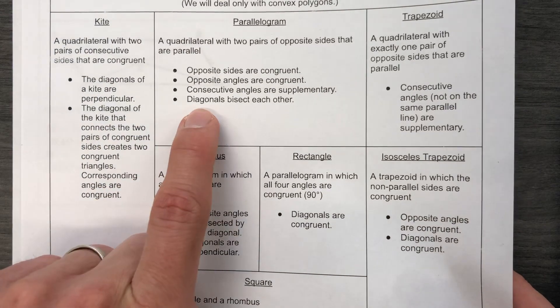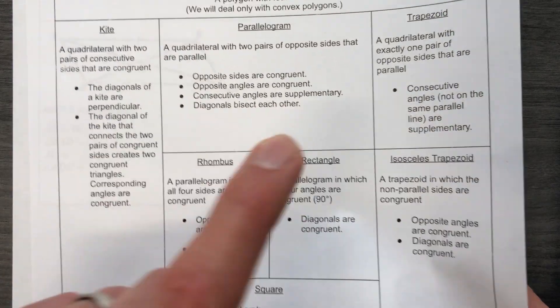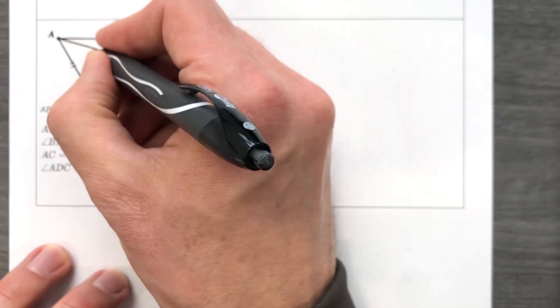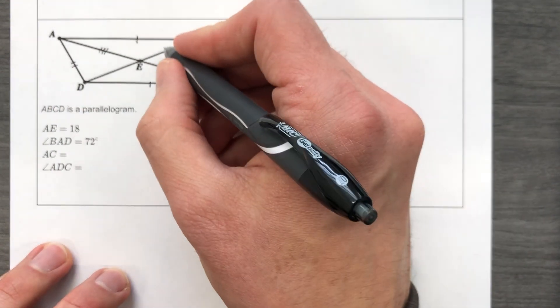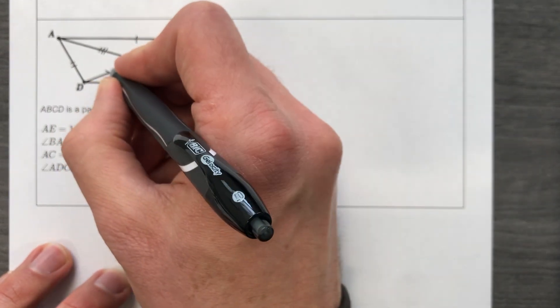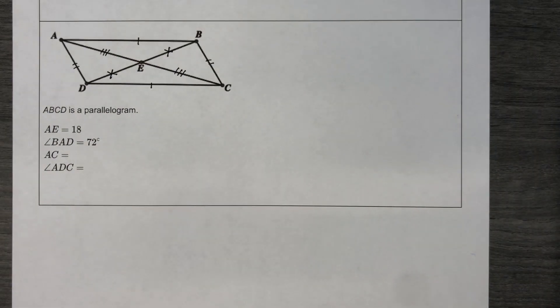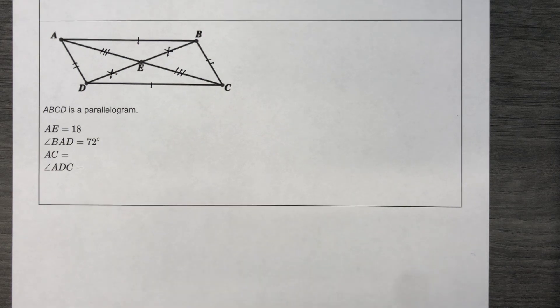The diagonals bisect each other, which means that this is congruent to that. And then you can put four hashtags if you want to. Four marks. I'm not. I'm going to put X's across them. Not X the variable.